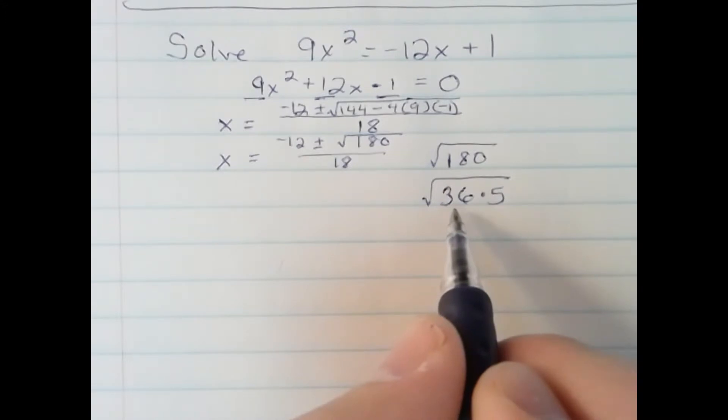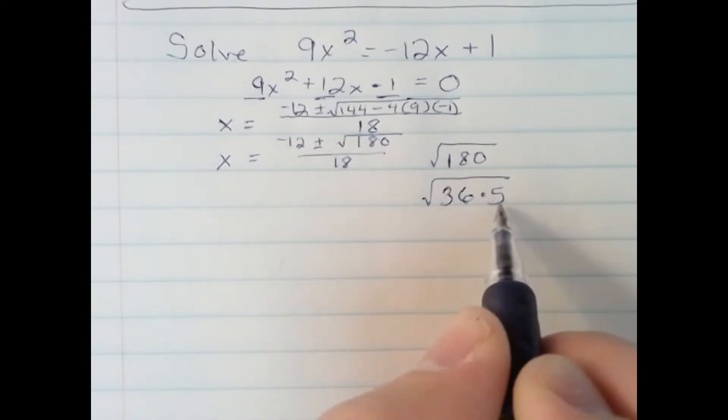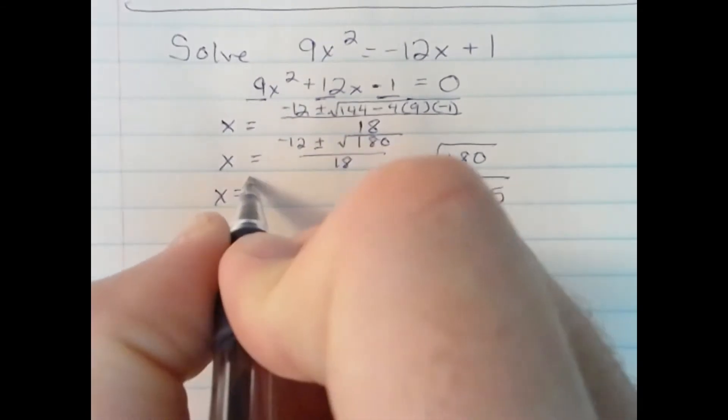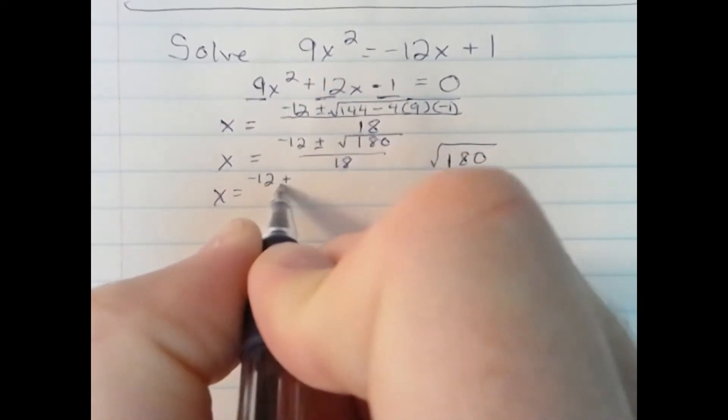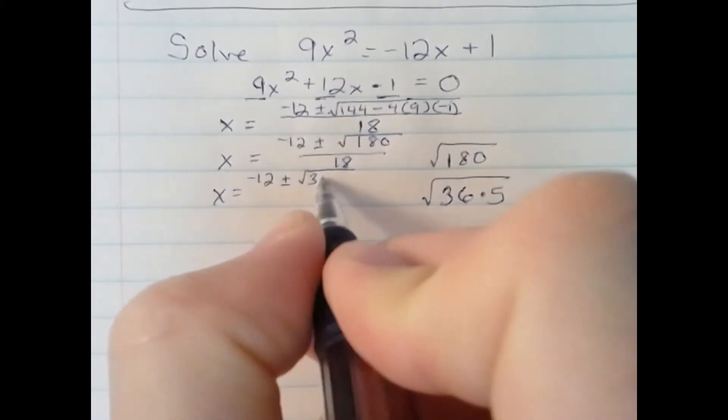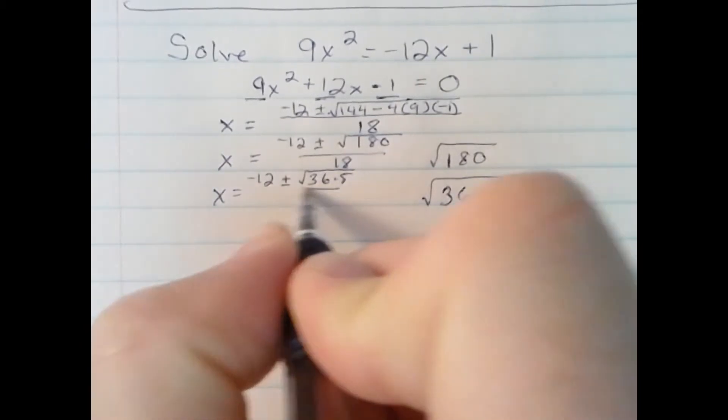Notice I can take the square root of 36, but not the square root of 5. So applying that, let's rewrite our answer. Negative 12 plus or minus square root 36 times 5. Still over 18.